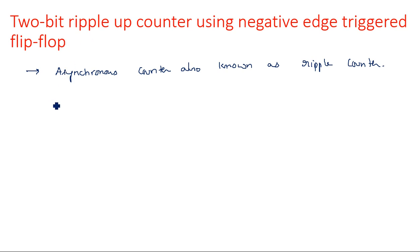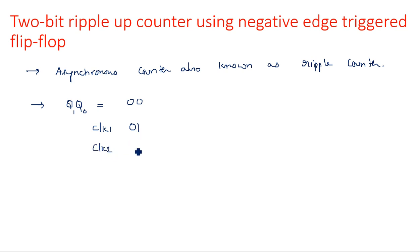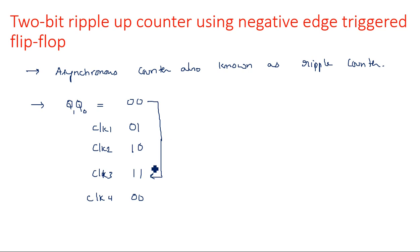So, 2-bit ripple up counter — a 2-bit up counter means it has 2 bits, Q1 and Q0. You start initially from 0, 0. When the first clock pulse occurs, the count will be incremented by 1, so that becomes 0, 1. When the second clock pulse occurs: 1, 0. When the third clock pulse occurs: 1, 1. When the fourth clock pulse occurs: 0, 0. So from initial state it is incremented from 0 to 3, and totally 4 clock pulses are counted.